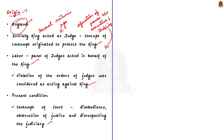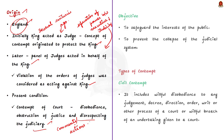Since the judges acted on behalf of the king, the violation of their orders was considered an outrageous act against the king himself. So anyone disobeying the orders of the judiciary was held in contempt of court. This is how the concept evolved. At present, disobedience to judges or obstruction of their directives is punishable as contempt of court, including comments and actions that show disrespect towards the courts. The objective is to safeguard the public interest, because if the authority of the court is belittled, public confidence in the administration of justice will be weakened, which might result in the collapse of the entire judicial system.